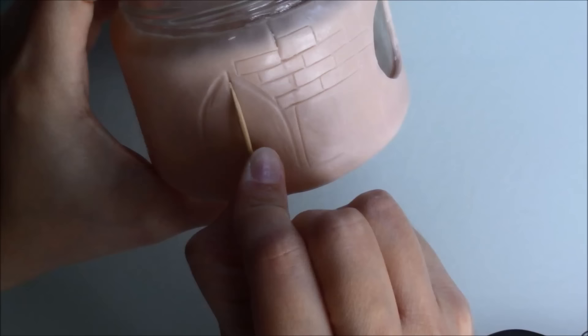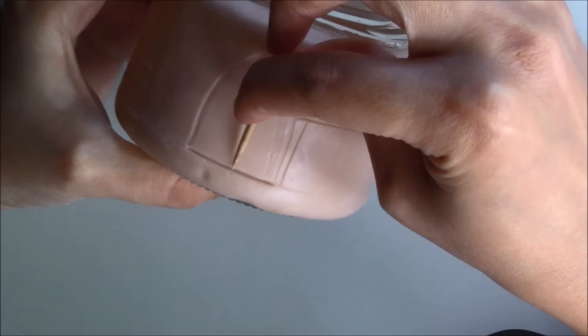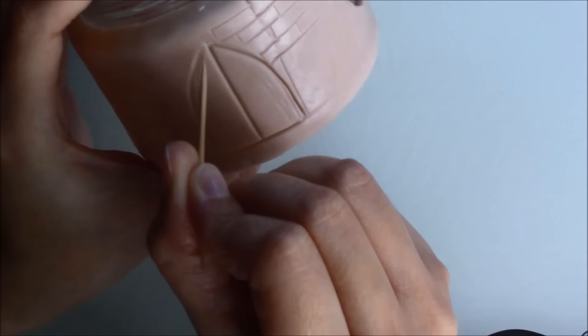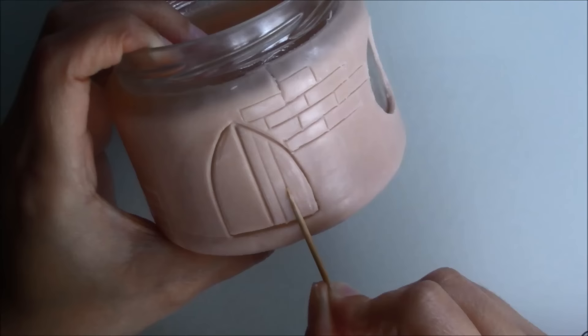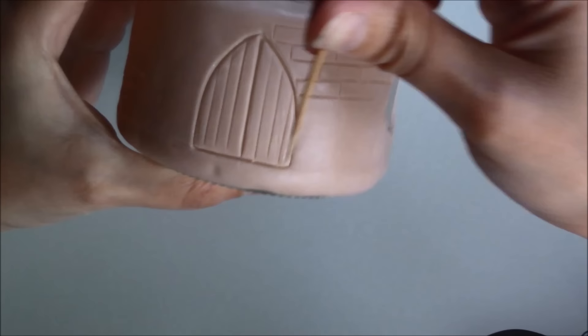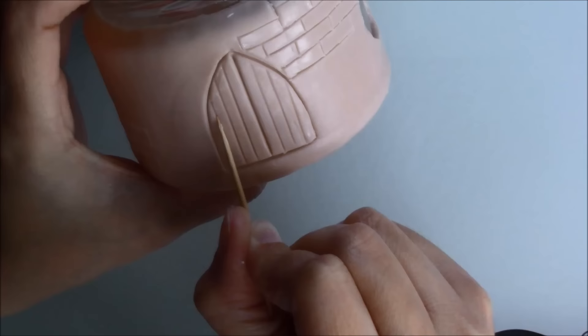I also used a toothpick to add detail to the door. When I score the lines, I don't go all the way down to the bottom edge, because then you'd end up with little peaks of clay sticking out the bottom. So I stop, turn the toothpick round and go back the other way.